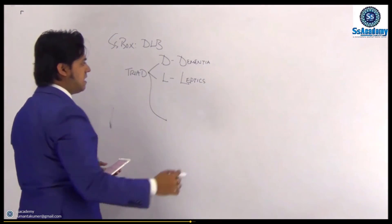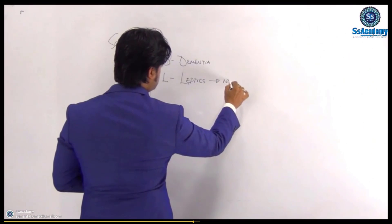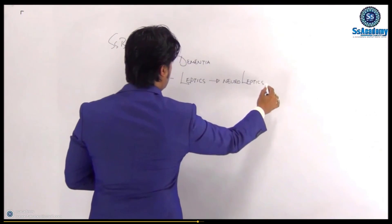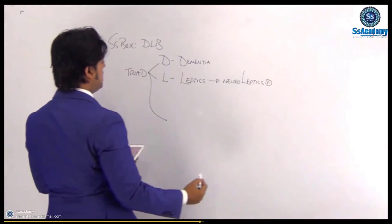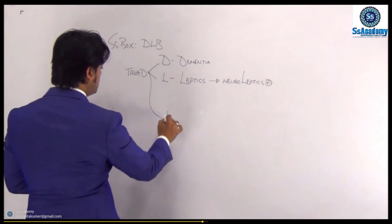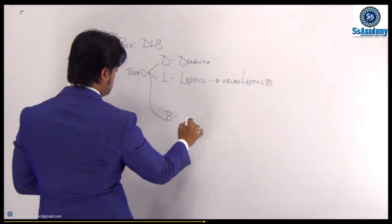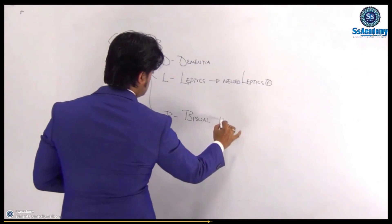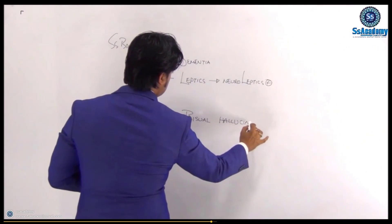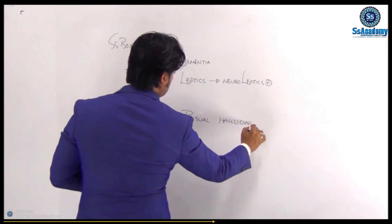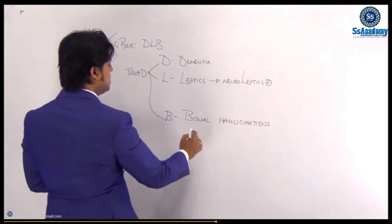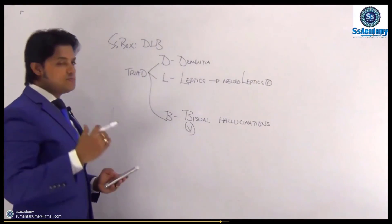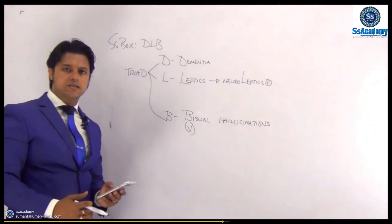Neuroleptics means they are sensitive to neuroleptics. And B, for we can write B for visual hallucinations. So visual hallucinations. That will be helpful. So DLB is the most important triad features that you can remember all together.